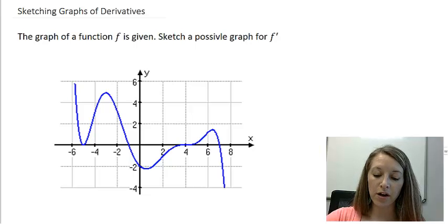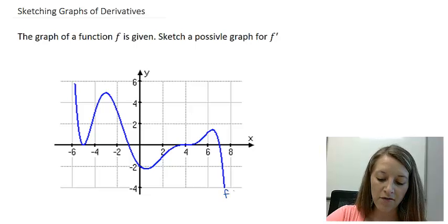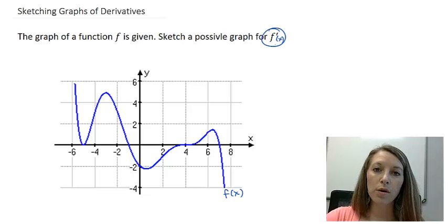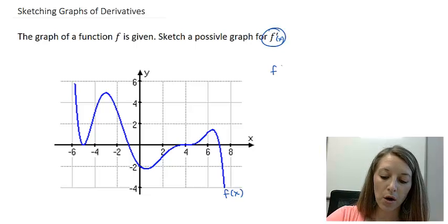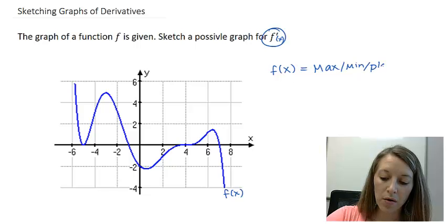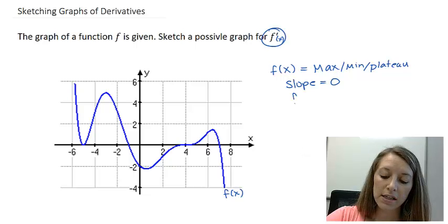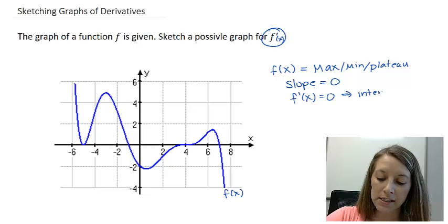They gave us the original function. This blue function here is f of x. What we want to do is graph f prime of x — the derivative — just given the graph of the original function, without actually knowing what the original function is. It goes back to what we know about slope. When our original function has a max, min, or plateau, that tells us the slope at that point is equal to zero. We have horizontal tangent lines, so the derivative equals zero, meaning it intercepts the x-axis at that point.